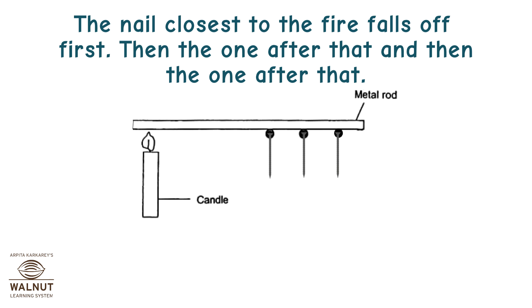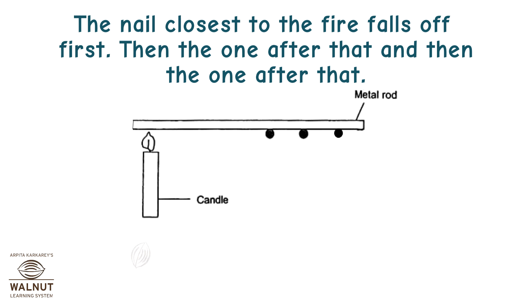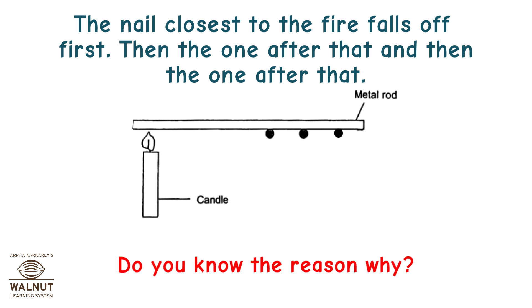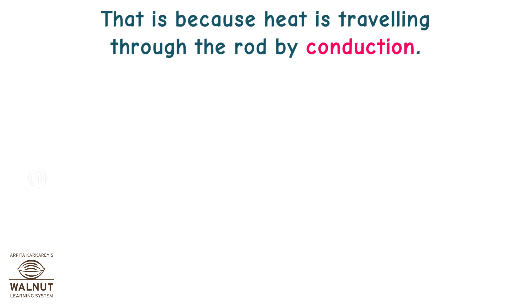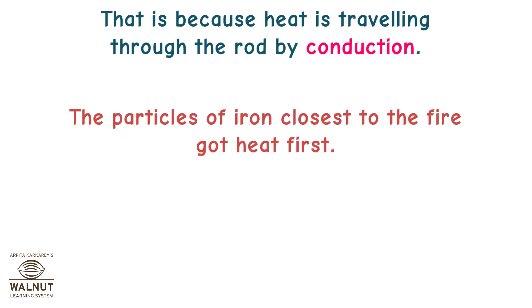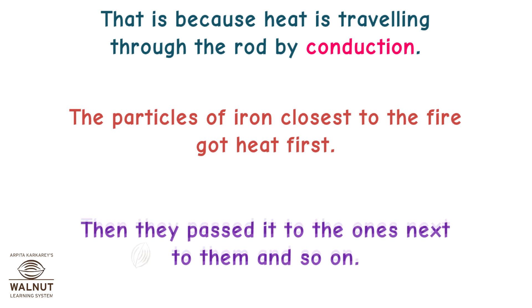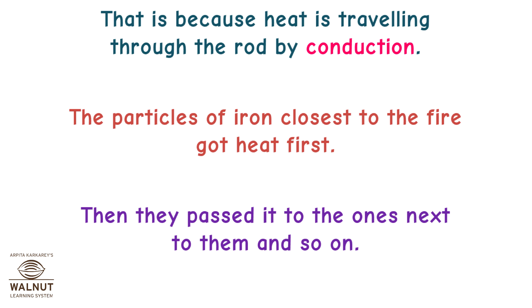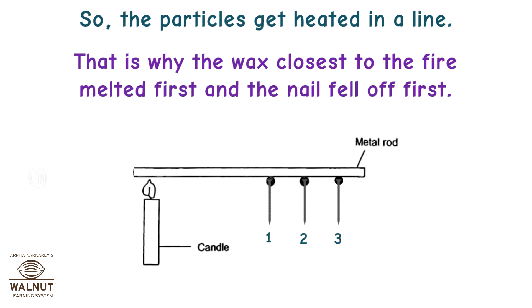The nail closest to the fire falls off first, then the one after that, and then the one after that. Do you know the reason why? That is because heat is travelling through the rod by conduction. The particles of iron closest to the fire got heat first, then they passed it to the ones next to them and so on. So the particles get heated in a line — that is why the wax closest to the fire melted first and the nail fell off first.